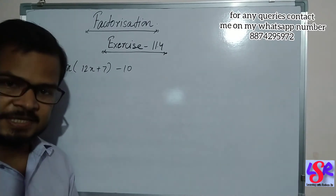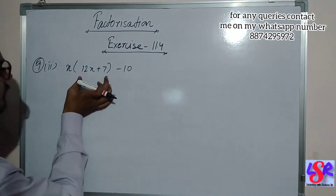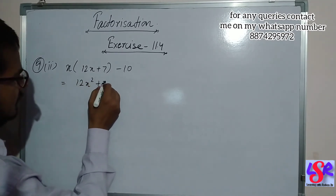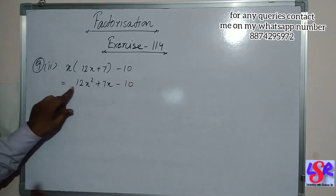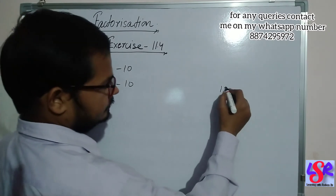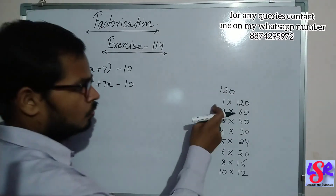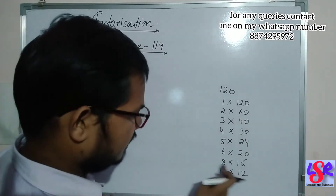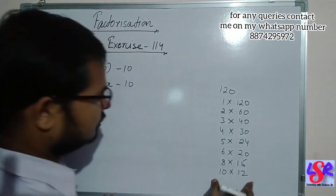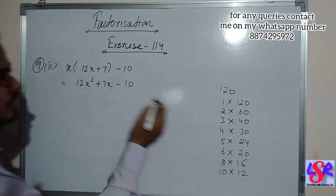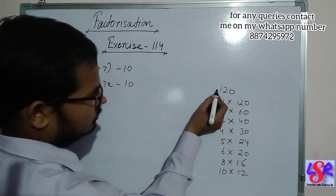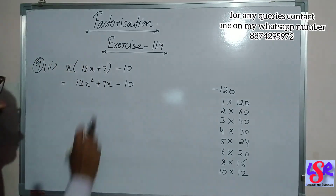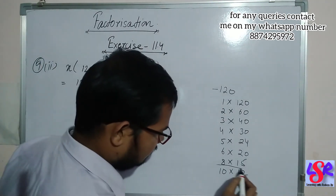Now let's go with question number 9, second part. Here we are having x in a bracket 12x plus 7 minus 10. Opening it gives 12x square plus 7x minus 10. The product of 12 and 10 is 120, and the factors are 1 into 120, 2 into 60, 3 into 40, 4 into 30, 5 into 24, 6 into 20, 8 into 15, and 10 into 12. The product of 12 and minus 10 is minus 120, so we subtract two factors to get 7. Subtracting 8 from 15 gives 7.